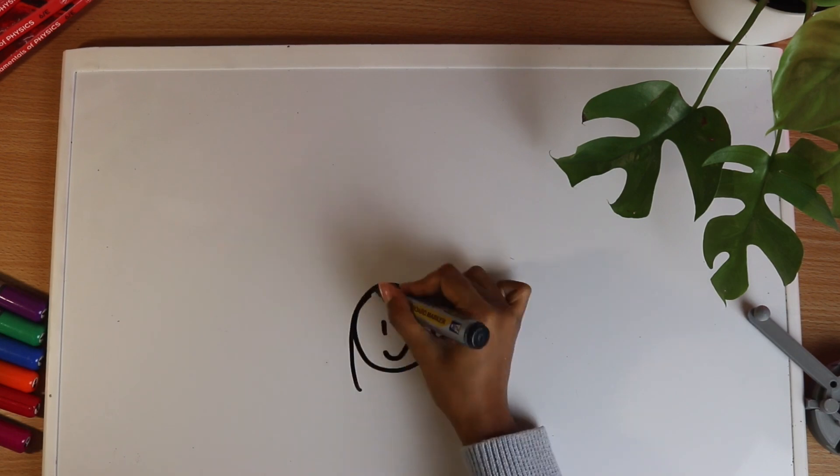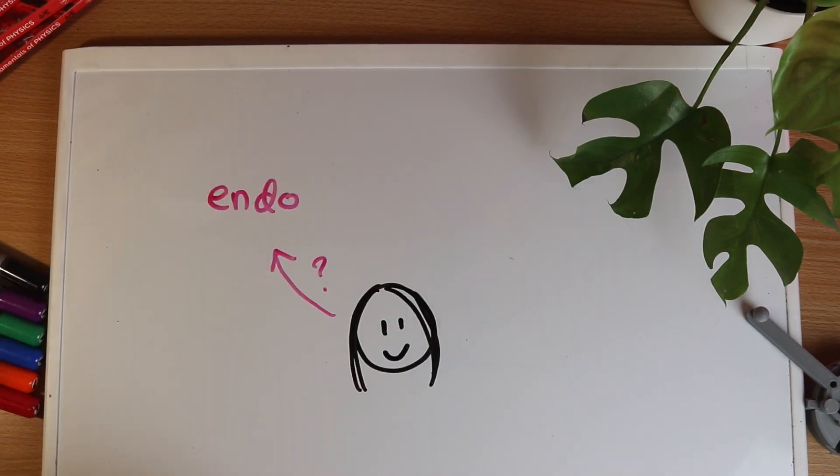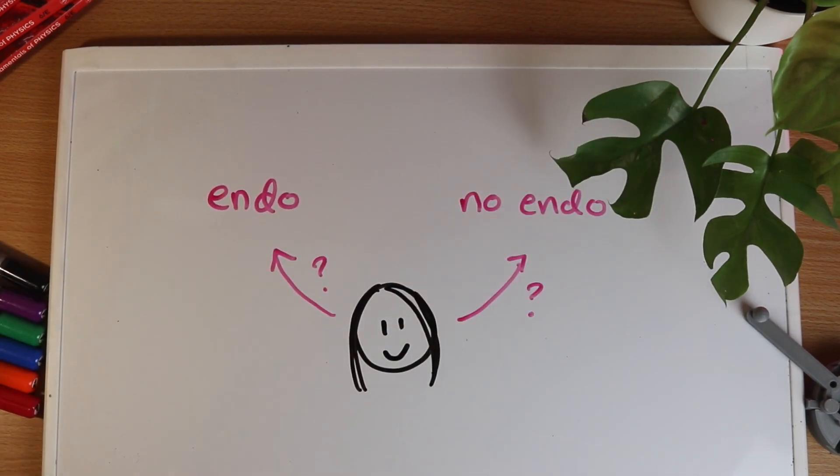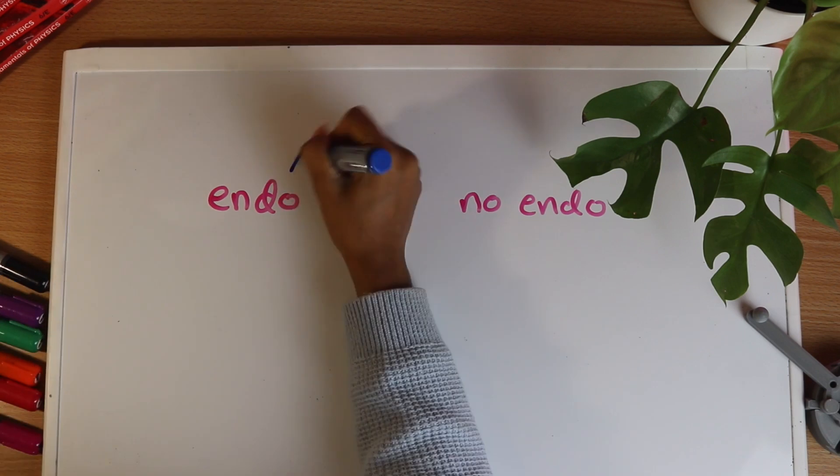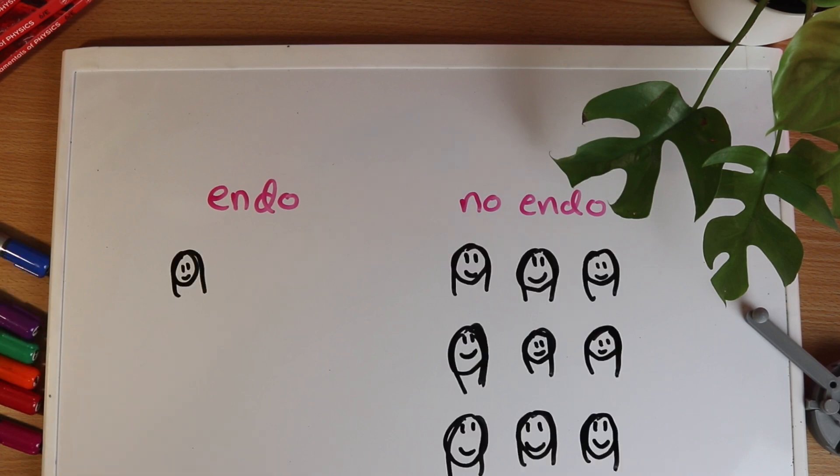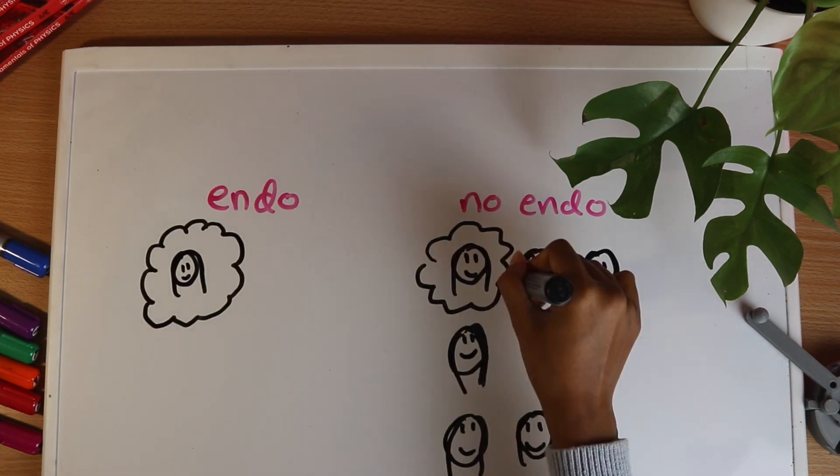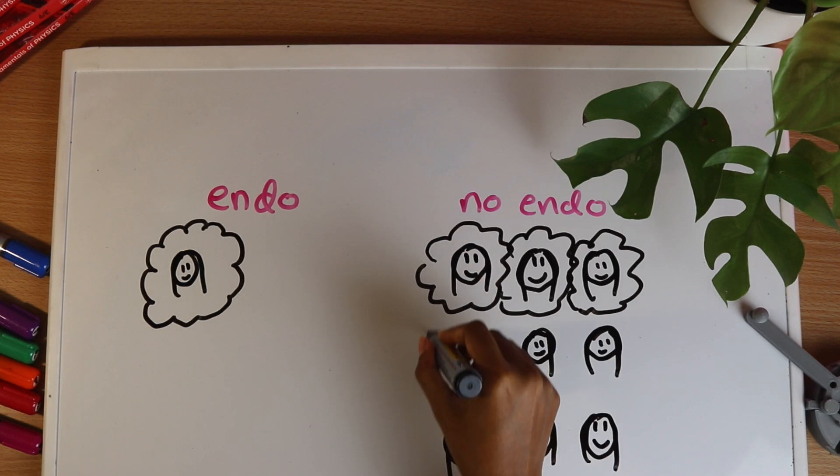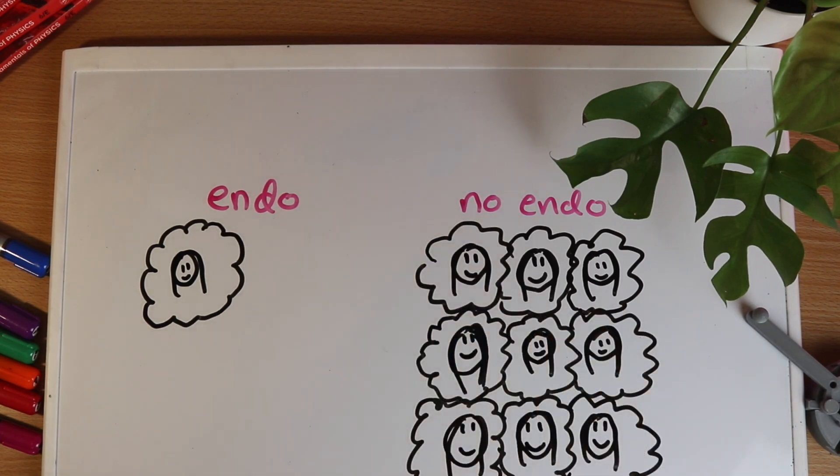Suppose someone like me wants to find out if they have endometriosis. First we need to know how common is this condition? Pretty common unfortunately. Approximately one in ten people who are assigned female have it. It's going to be useful to think about that probability by imagining ten different people just like me who are getting diagnosed. One of these people is the unlucky one who has endo and the other nine don't but none of them know their fate yet.